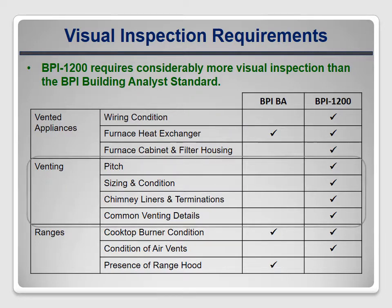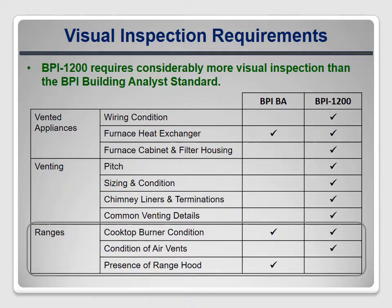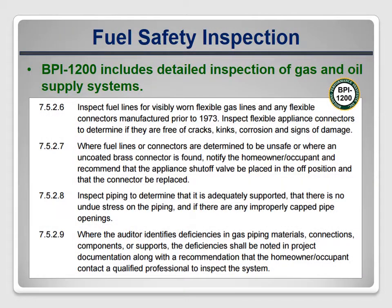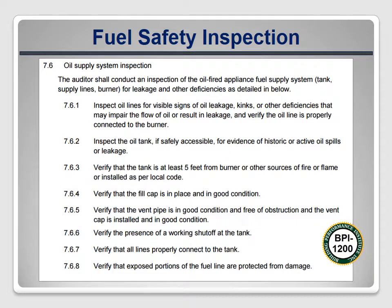BPI 1200 and the BA Standard both address range safety, but the focus is on different details. BPI 1200 provides detailed guidance about how to properly inspect a natural gas or LP gas supply system — a list that will probably be very useful to programs and auditors in training. It also provides even more detailed guidance about how to properly inspect an oil supply system, which can form the basis for a comprehensive inspection checklist.